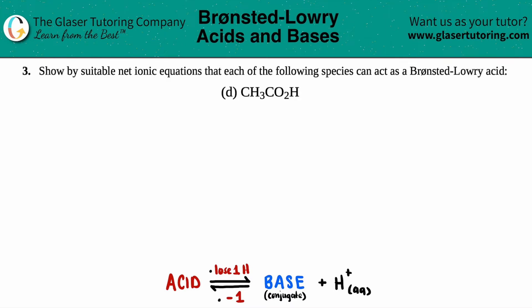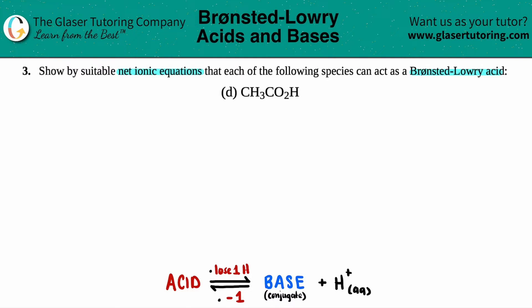Number three. Show by suitable net ionic equations that each of the following species can act as a Brønsted-Lowry acid. We have letter D out of the bunch. In this case, we just have to write an equation representing that CH3CO2H is a Brønsted-Lowry acid.